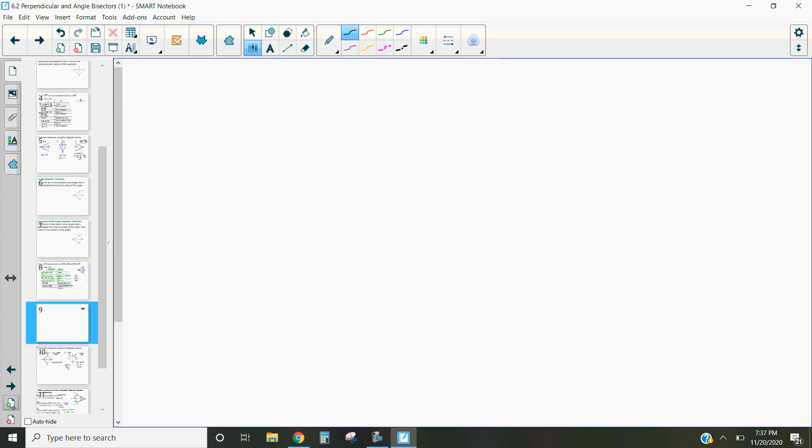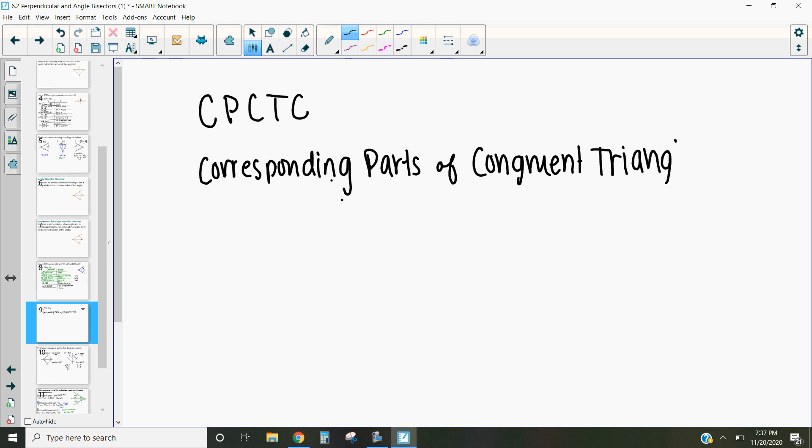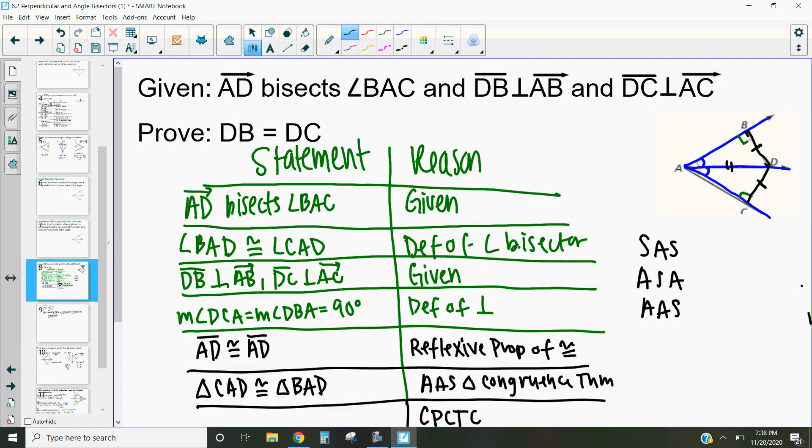Again, what that stands for, let's go to this other side. CPCTC. What that stands for is corresponding. So let's use that here, which basically says that if two triangles are congruent, then their parts that correspond are also congruent.